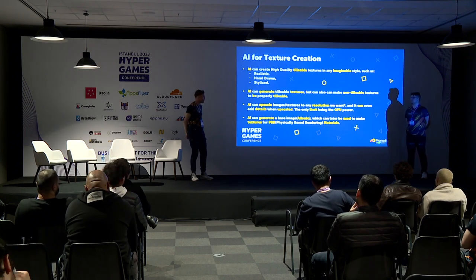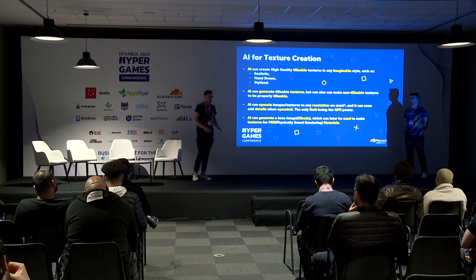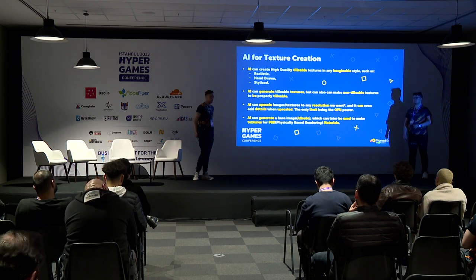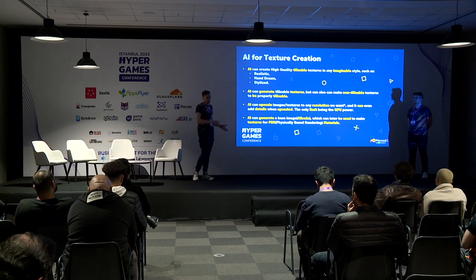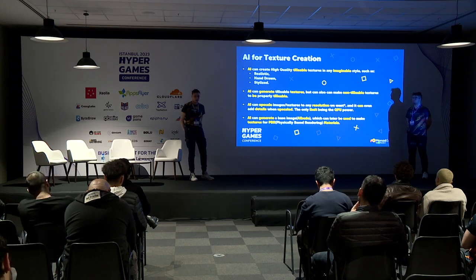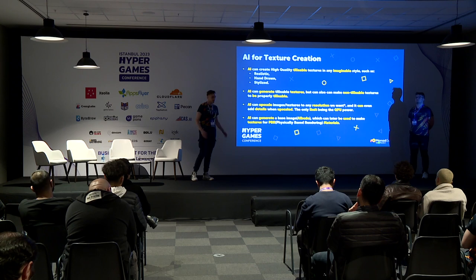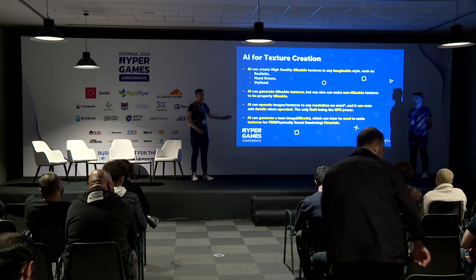AI can also upscale images. If you have a 512x512 texture and need it to be 4K, AI can do that while increasing sharpness and adding detail. The only limit for upscaling is your GPU power — if it isn't powerful enough, it might not do 8K or 16K, but going from 512 to 4K is capable on many GPUs. AI can also generate albedo textures to create fully physically-based rendering materials for realistic PC and console games.